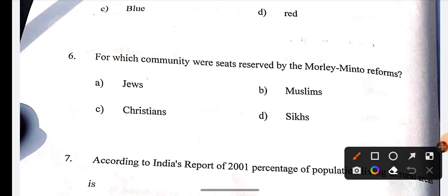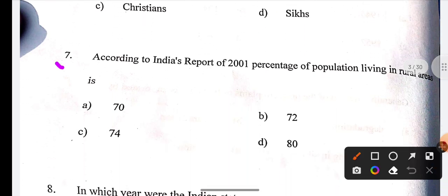If you think any question is incorrect, please comment below. The correct answer must be B. Next question: According to Indian report, what percentage of population lives in rural areas? The correct answer is A, 70%.